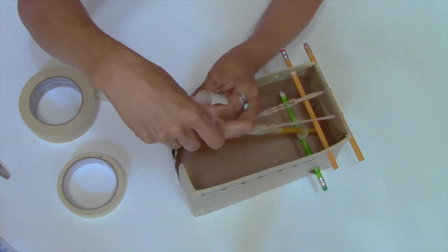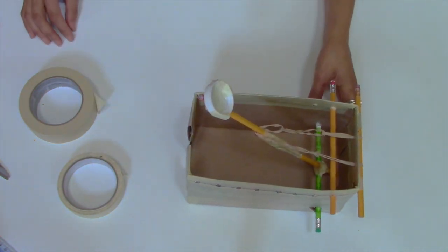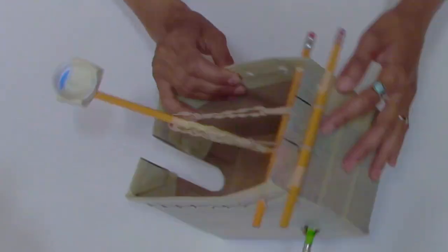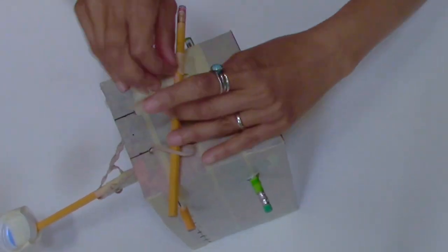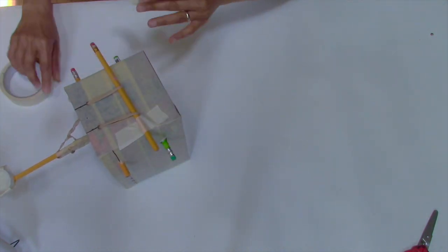There are two adjustable design features built into this catapult. By changing the position of the pencil on the front end, you can tighten and loosen the bands, or simply change it out for another band that is either longer or shorter. This is how you can adjust the force applied to your marshmallow or projectile.